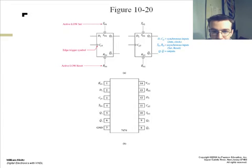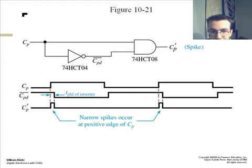This is a 7474 D latch with a clock pulse. And again, here's a waveform diagram. It shows you have the propagation of the inverter with your narrow spikes occur at positive edge of your clock pulse when your CPD is high as well as the clock switching.